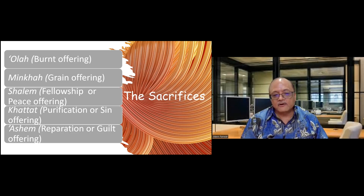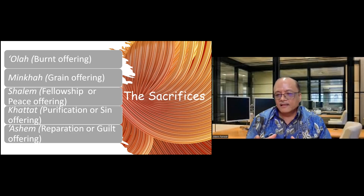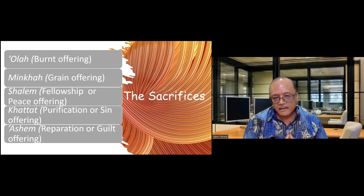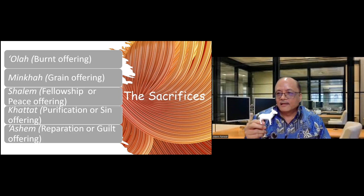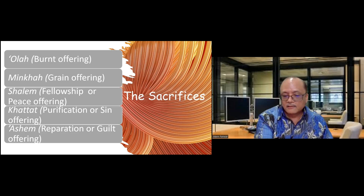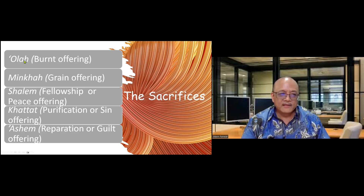The sins addressed in Ashen are all relational sins — fraud, stealing from your brother, cheating. To explain it simply: if you cheat somebody out of a thousand ringgit, you have to pay back the thousand ringgit, add 20% interest, and then bring an offering to the temple. The only offering for Ashen was a ram, which was rather unaffordable for most people. The Ola could also be used as a combination offering with Katat, Ashen, Minka, and so on — sometimes used for sin, sometimes purely for worship.